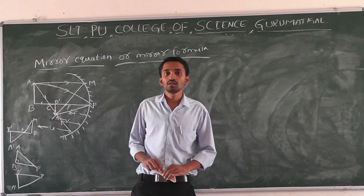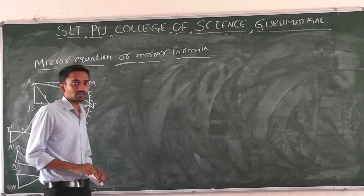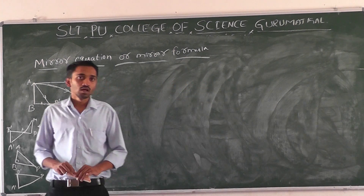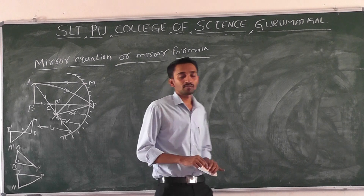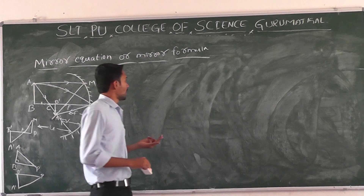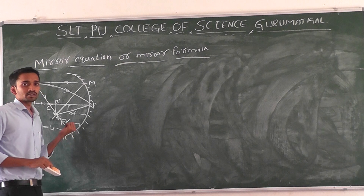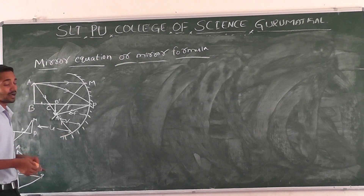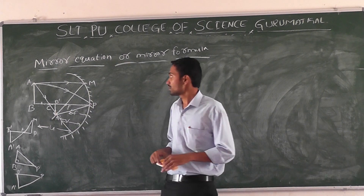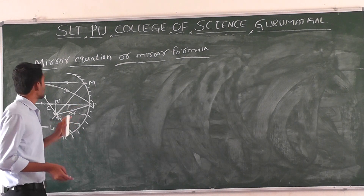Last class we studied about the basics of optics, ray optics and optical instruments. We studied ray of light, beam of light, concave mirror, convex mirror and reflection of light, pole, principal axis, center of aperture, and focal length. We also discussed the relation between focal length f and radius of curvature r of a concave mirror.